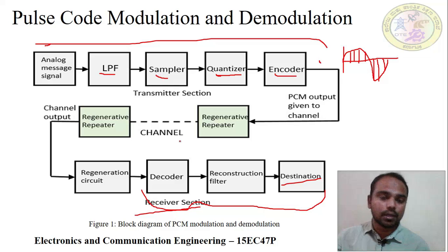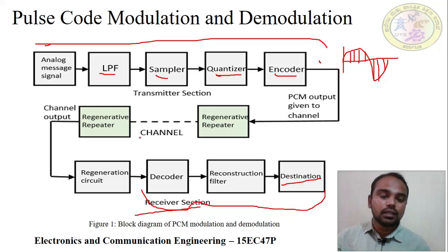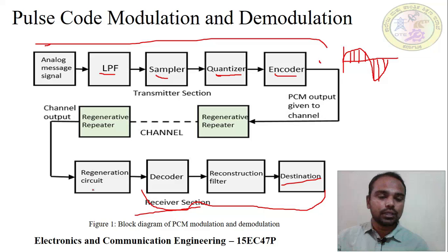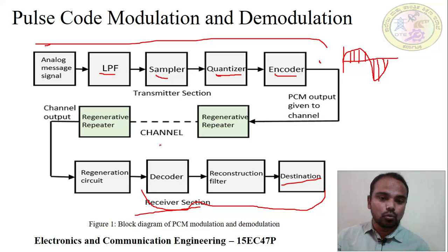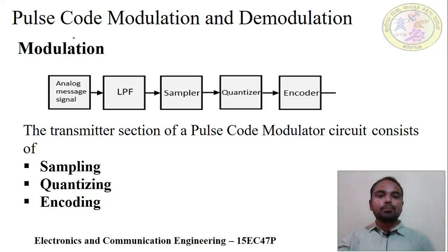The transmitted signal is sent to a regenerative repeater, which increases the signal strength before sending it over the channel. The channel may be wireless or wired. At the receiver side, we again use a regenerative repeater because as the signal travels through the channel it may fade — so we increase its strength again. The decoder and reconstruction filter then convert the digital signal back to analog. This is called the demodulator.